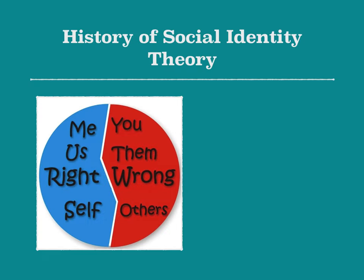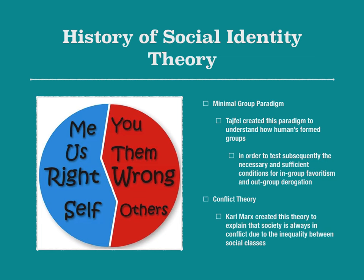A little history about social identity theory. Minimal group paradigm — Tajfel created this paradigm to understand how humans formed groups. Minimal group paradigm is the rough draft, if you will, of social identity theory, and it was created to test the necessary and sufficient conditions for in-group favoritism and out-group derogation. Before social identity theory and minimal group paradigm, there was conflict theory. Conflict theory is the us-versus-them mentality in a political realm, whereas social identity theory is the us-versus-them mentality within intergroup communication.